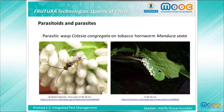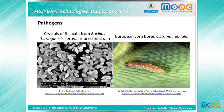Parasitoids are distinct from true parasites in that a parasitoid will ultimately kill its host or otherwise sterilize it. Parasites are smaller than their host and don't generally kill it — several species of mites are an example of parasites. Finally, pathogens are diseases caused by fungi, bacteria and viruses that kill the host. Some are naturally occurring and some have been commercially developed. Bacillus thuringiensis, or Bt, is a gram-positive, soil-dwelling bacterium commonly used as a biological pesticide.